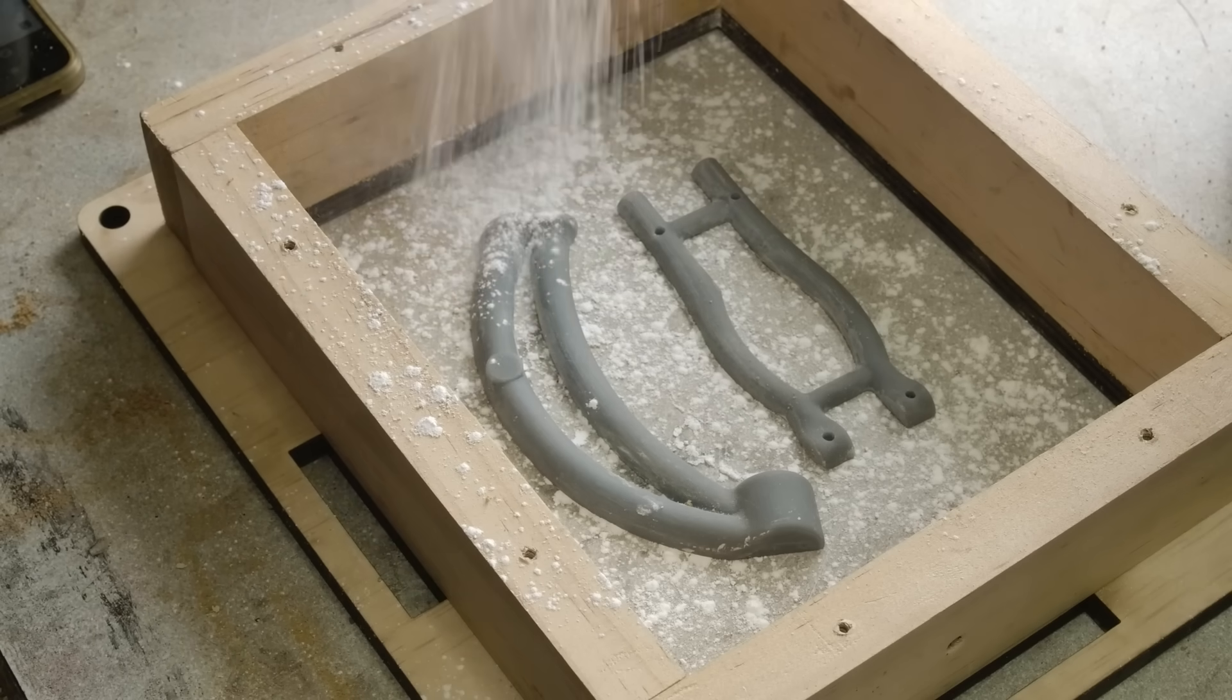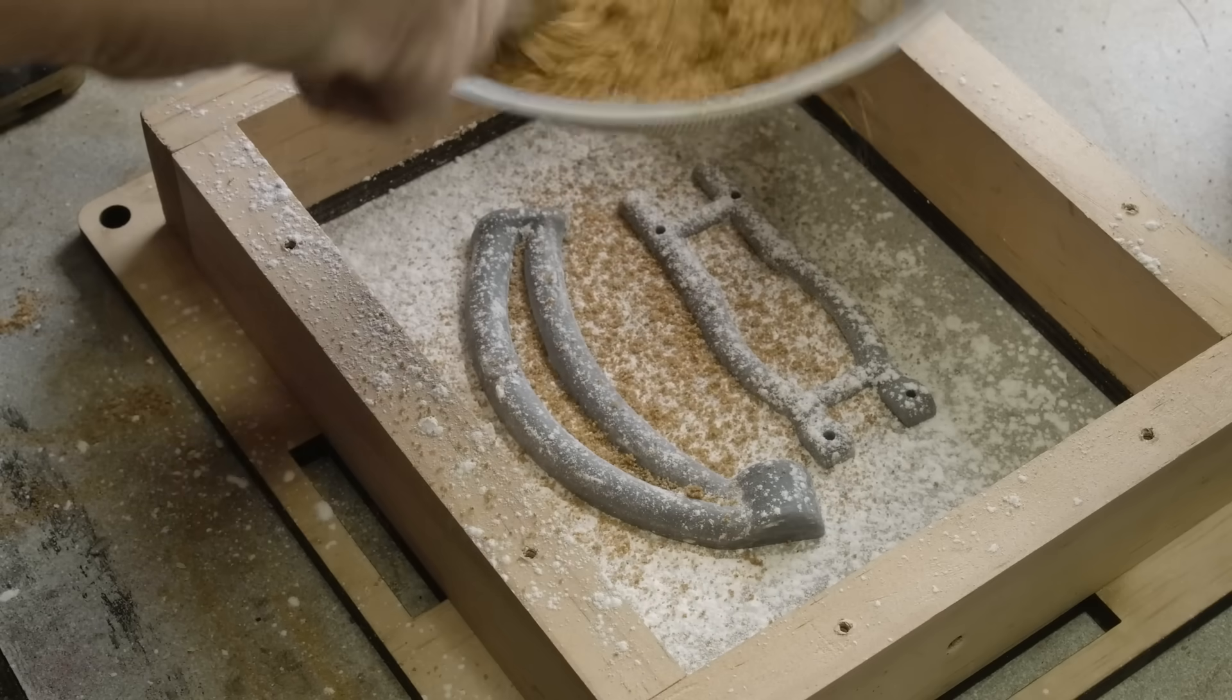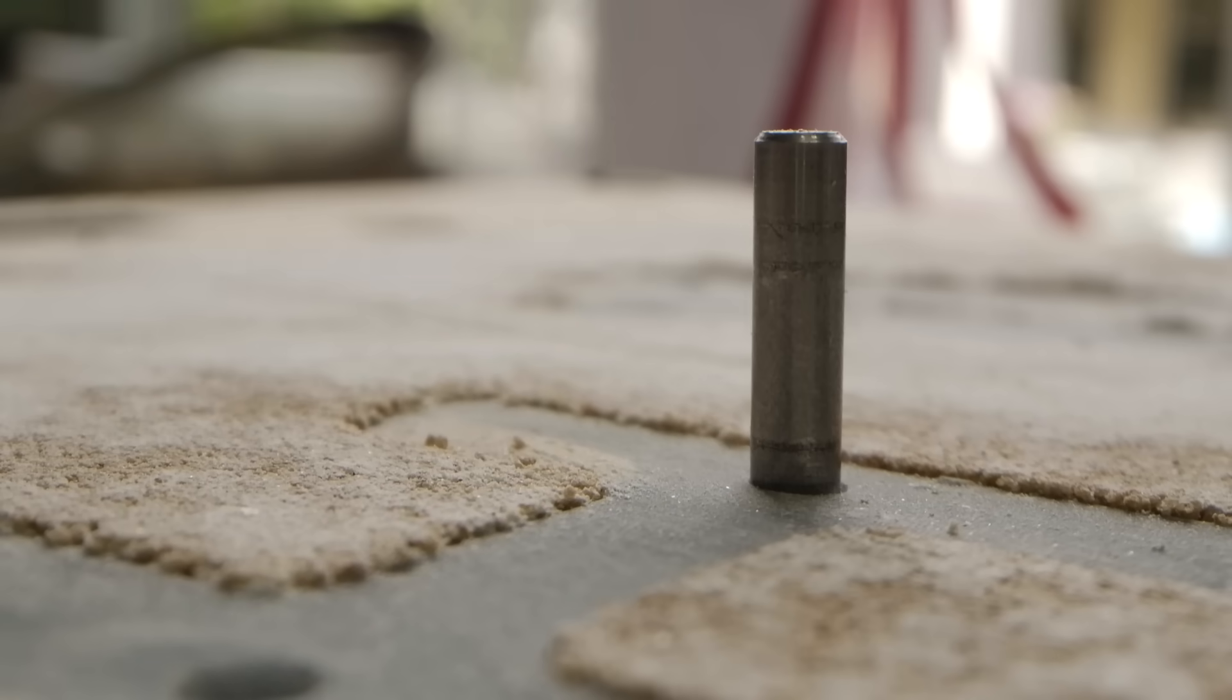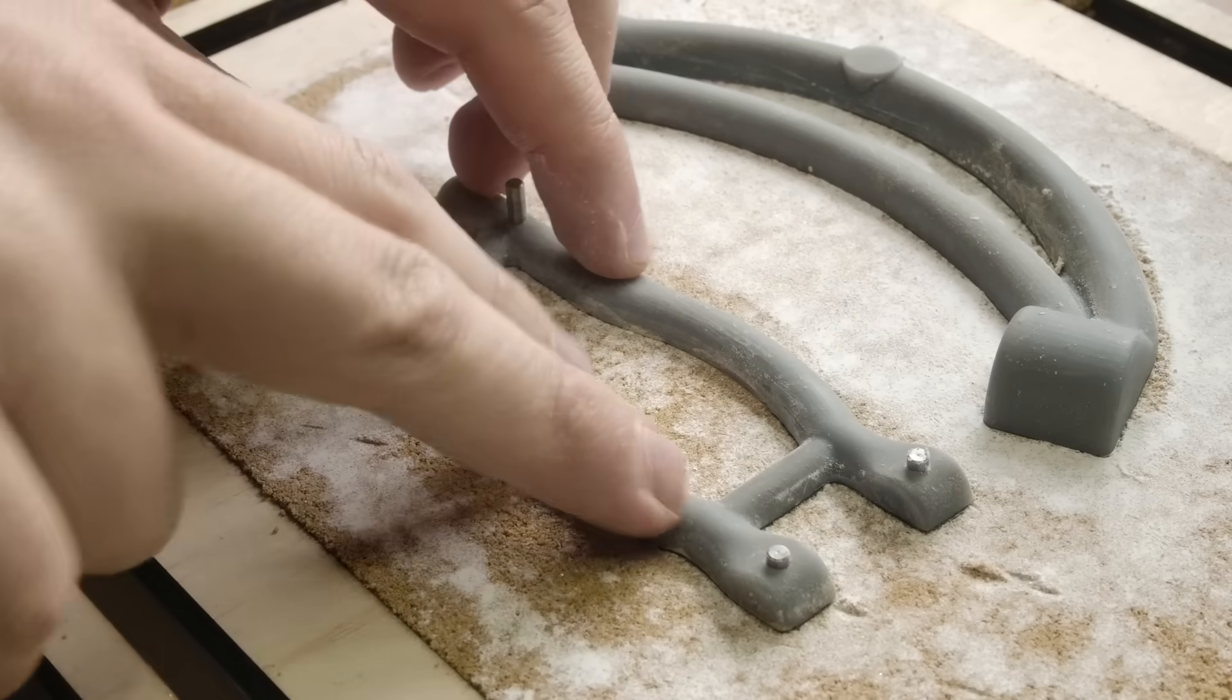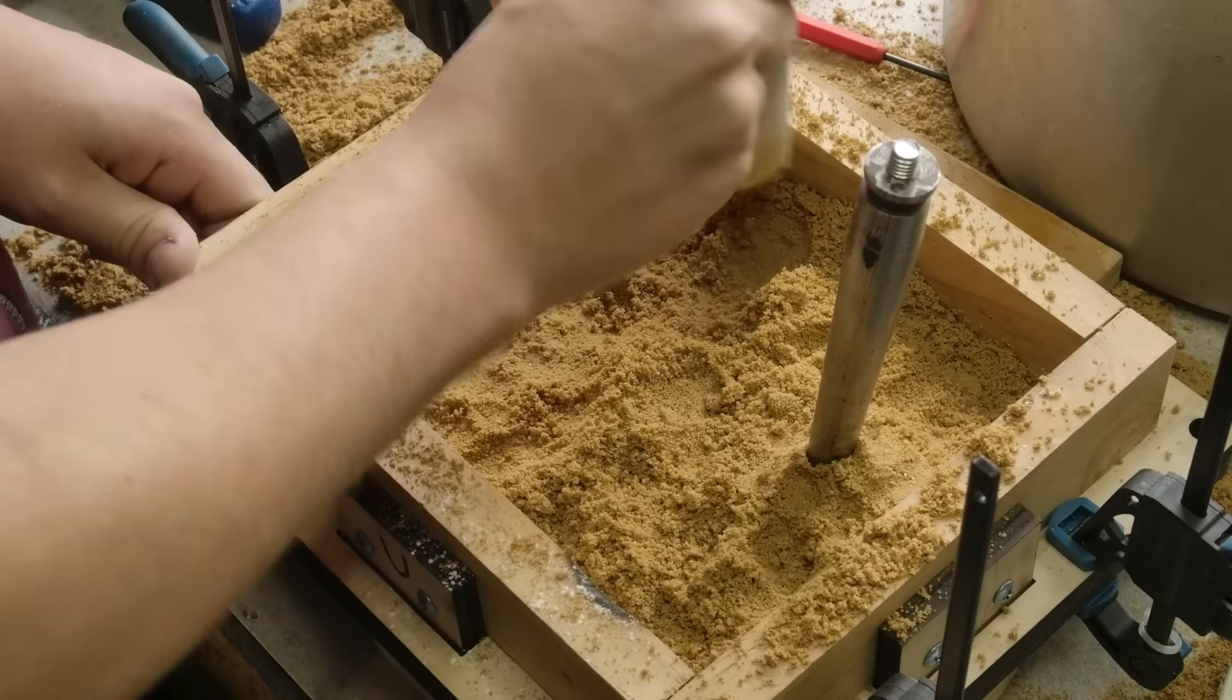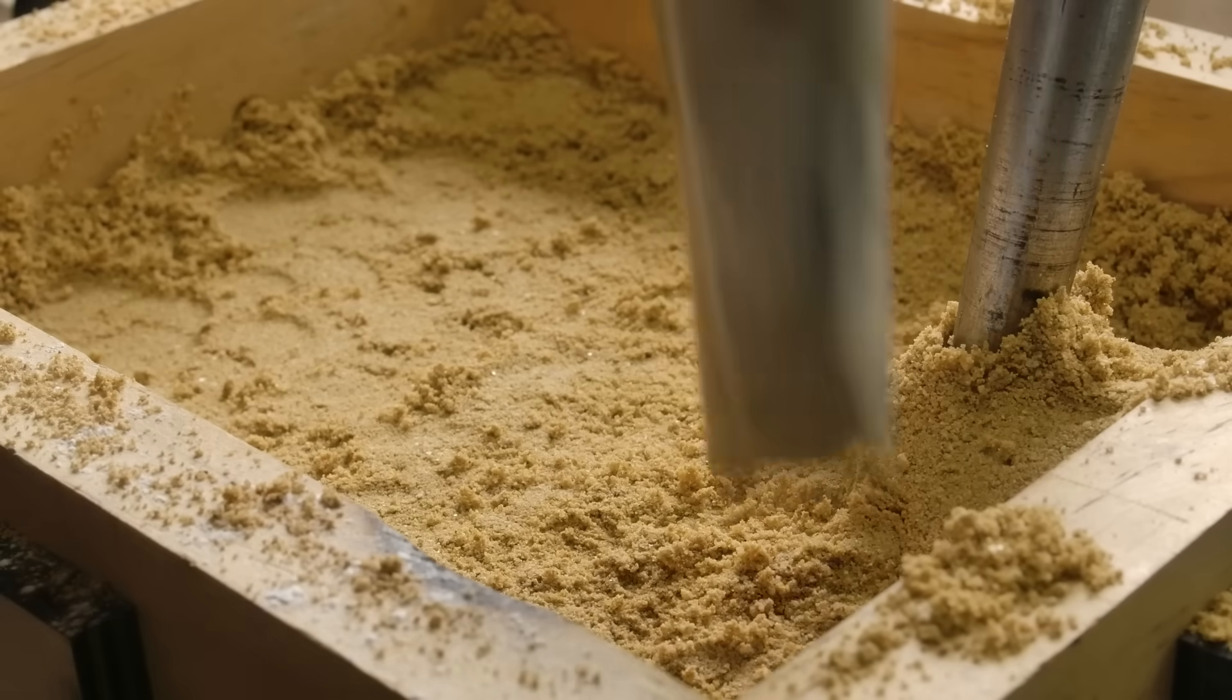The second mould process is much the same as the first, with some small differences. First, I'm casting two parts at once. These parts are also made of two halves, so they need alignment pins to keep the parts in position. I'm also ramming the sand in layers this time, to try and get a better surface finish. We will see the consequence of this later.